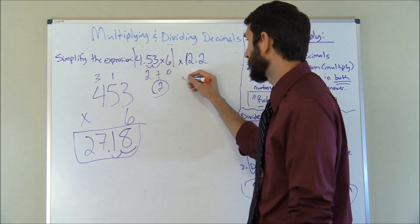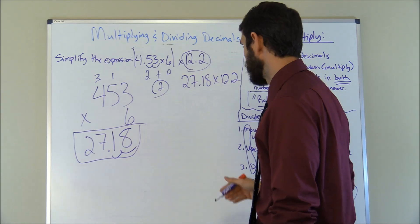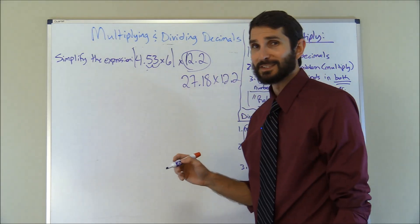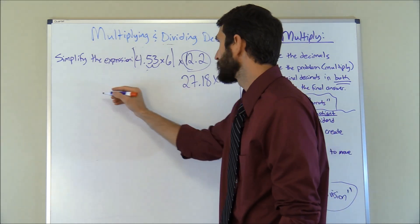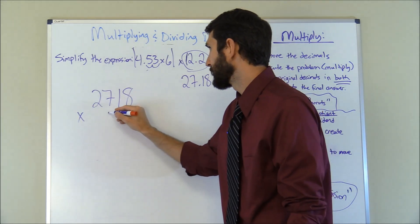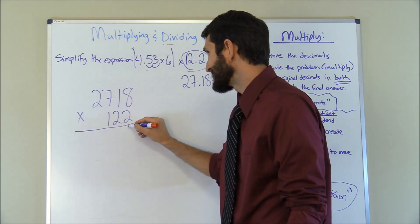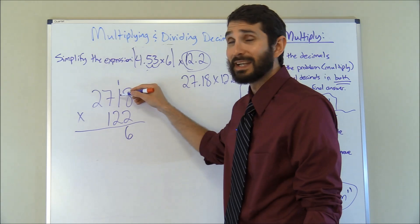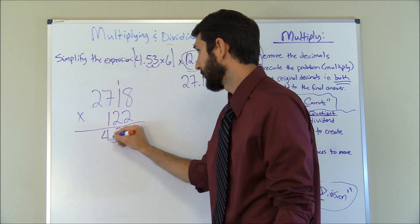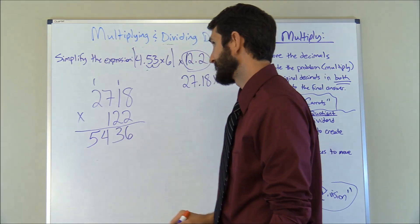Now we finish the problem: 27.18 times 12.2. Always put the larger number on top. Removing decimals, that's 2718 times 122. Starting with 2: 2 times 8 is 16 — put the 6, carry the 1. 2 times 1 is 2, plus 1 is 3. 2 times 7 is 14 — put the 4, carry the 1. 2 times 2 is 4, plus 1 is 5. First row: 5, 4, 3, 6. The next digit is also 2, so it's the same calculation, but moved one digit to the left — giving us 5, 4, 3, 6 again, shifted over.